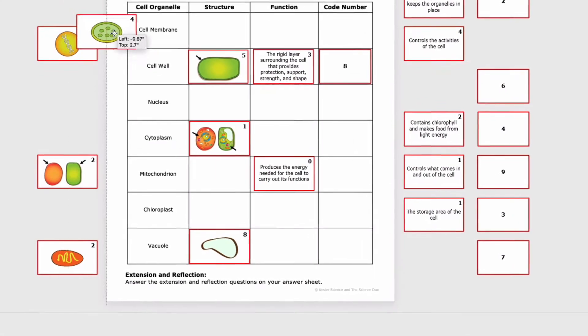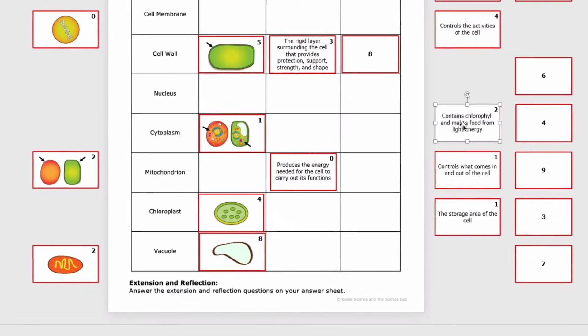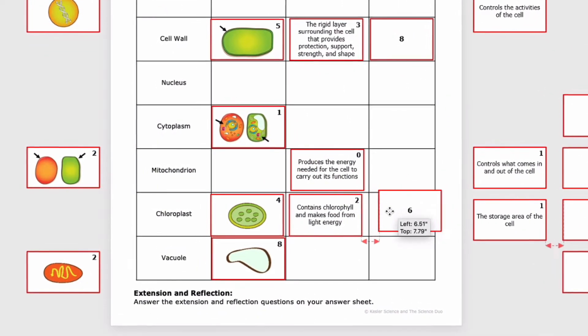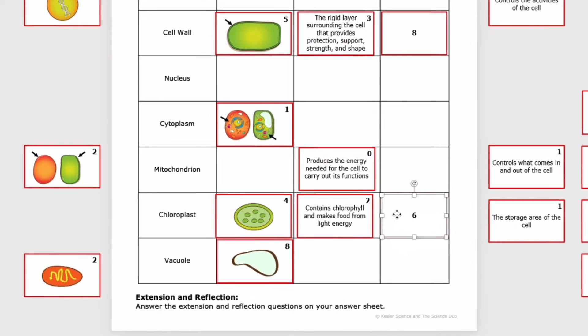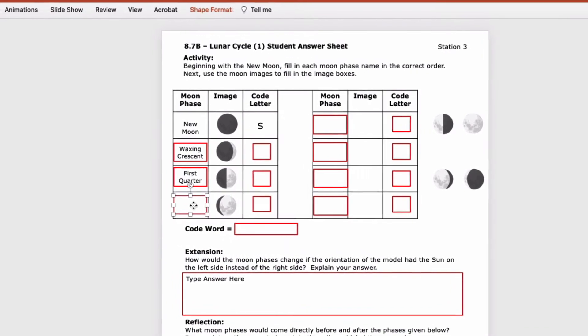Students will work through three to four stations a day as an end-of-year review. Each station highlights one of 54 middle school science standards and features an engaging activity, an extension activity, and reflection questions to demonstrate mastery.